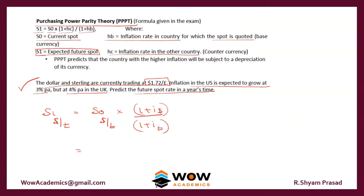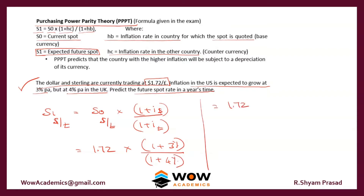Now it's straightforward to solve: the spot rate is 1.72, the inflation rate in the US is 3%, and in the UK it is 4%. So we calculate: 1.72 × (1.03 / 1.04), which gives us an answer of $1.70 to the pound. That is the expected future spot rate.